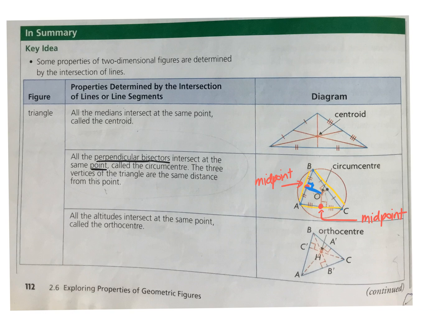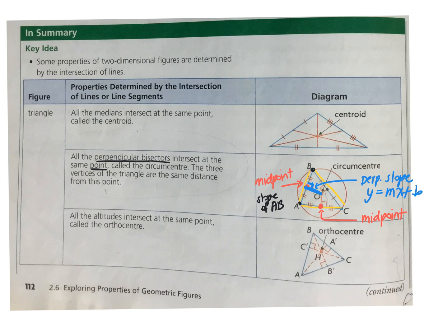To find the equation of a perpendicular bisector, you need to know the slope of AB, then figure out a line that's perpendicular to that — a negative reciprocal slope. Once you know the slope and you know the midpoint, because that's a point on the line, you can find the equation of the line.